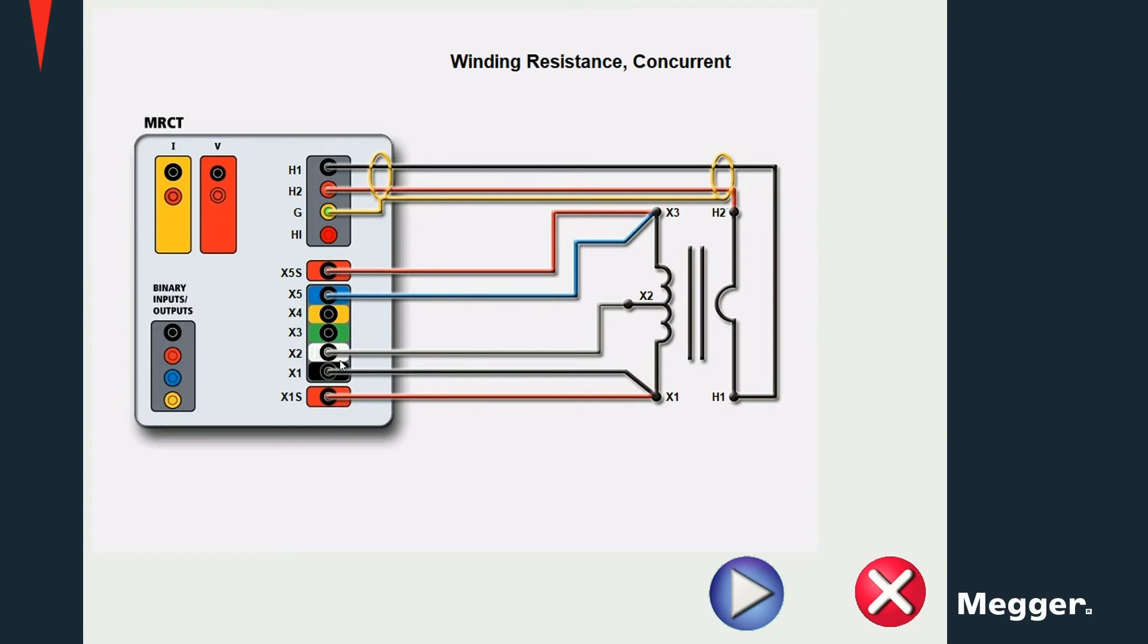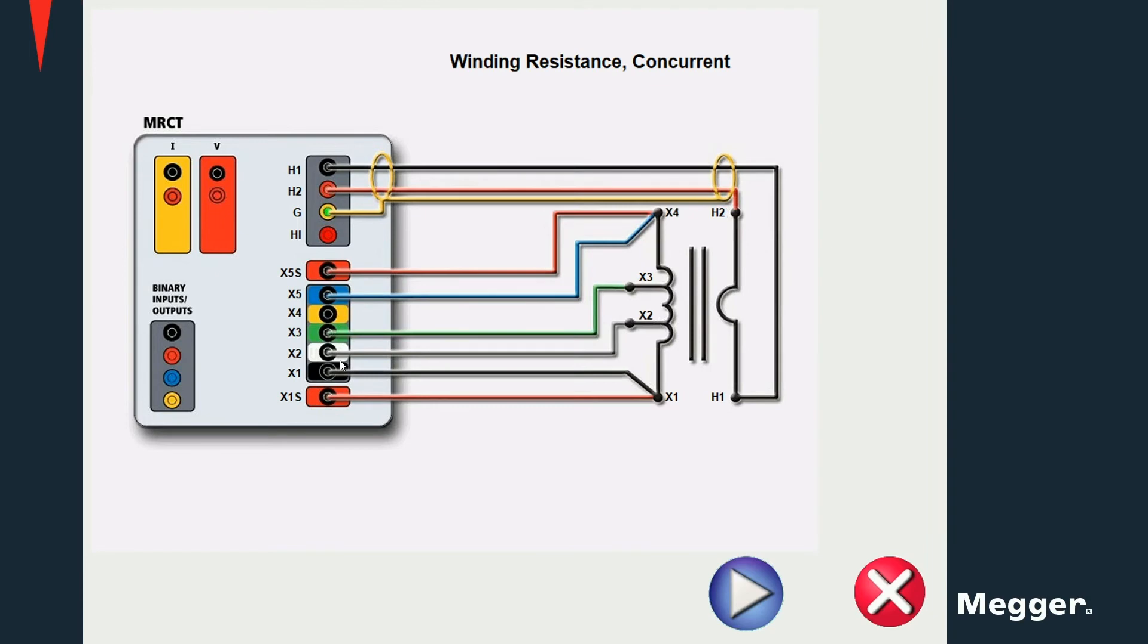For a three-tap current transformer, connect the X1 and X5 terminals to the main tab, X1 and X3, and the XT2 terminal to the second tab. Similar connections apply for a four-tap current transformer. X1 and X5 should always be connected to the main tabs, X1 and X4 in this case, and the other terminals to the corresponding tabs on the current transformer.